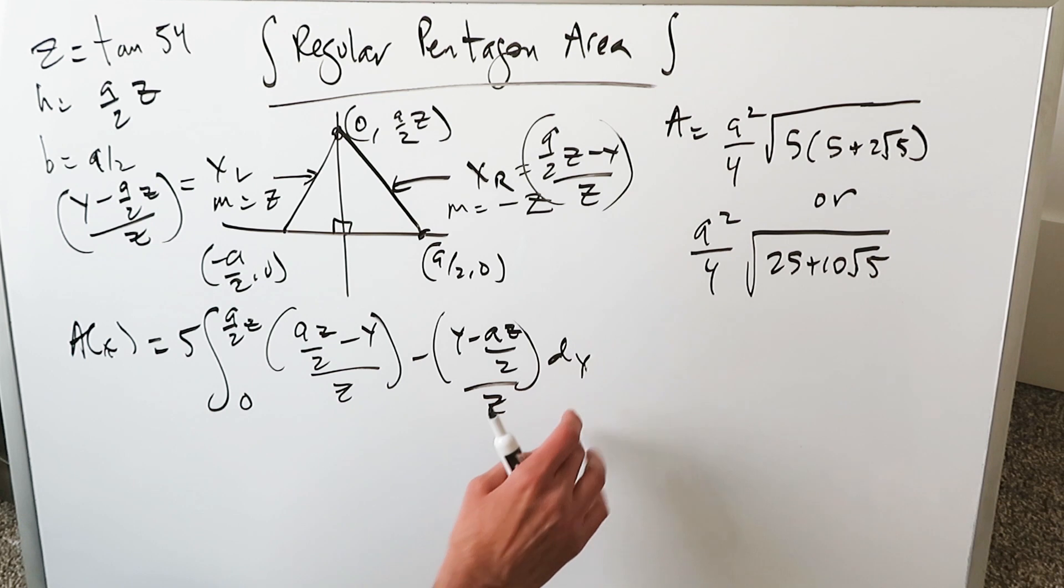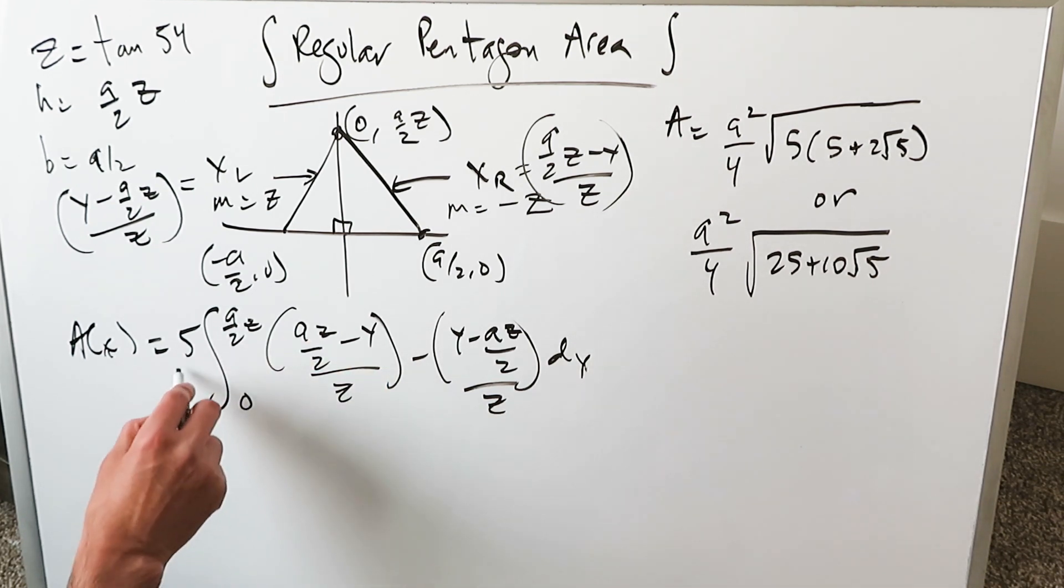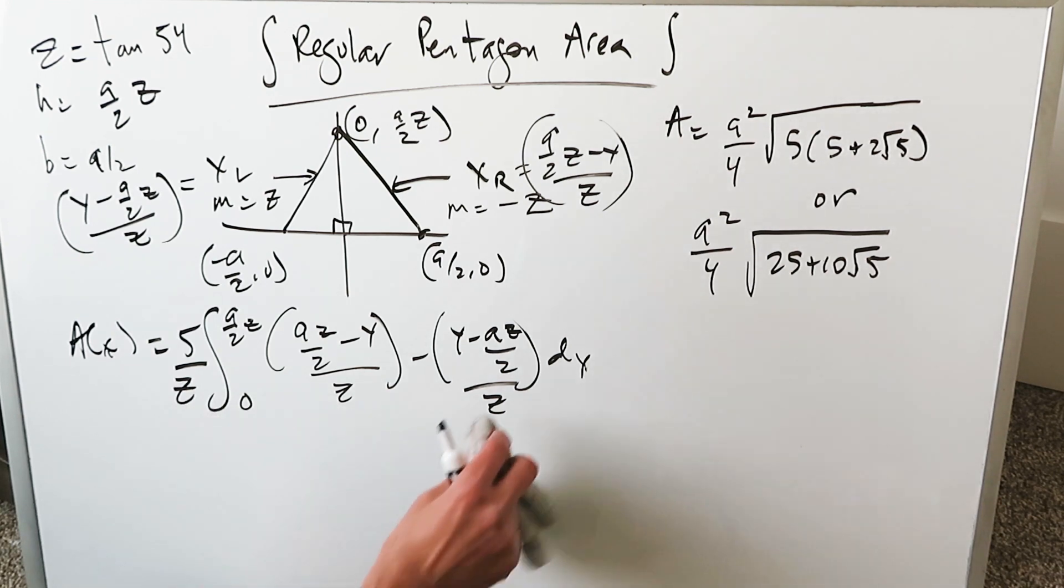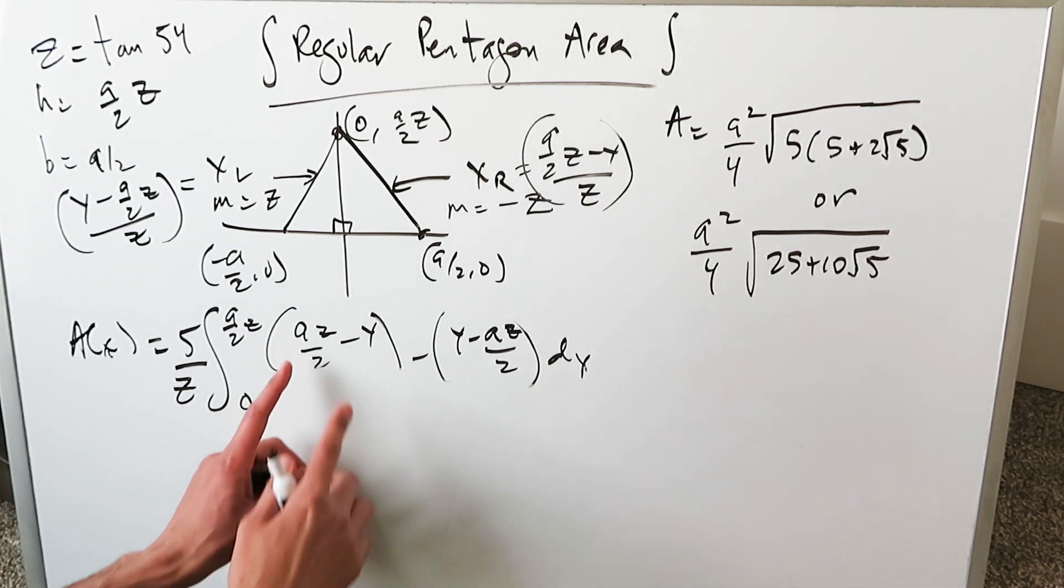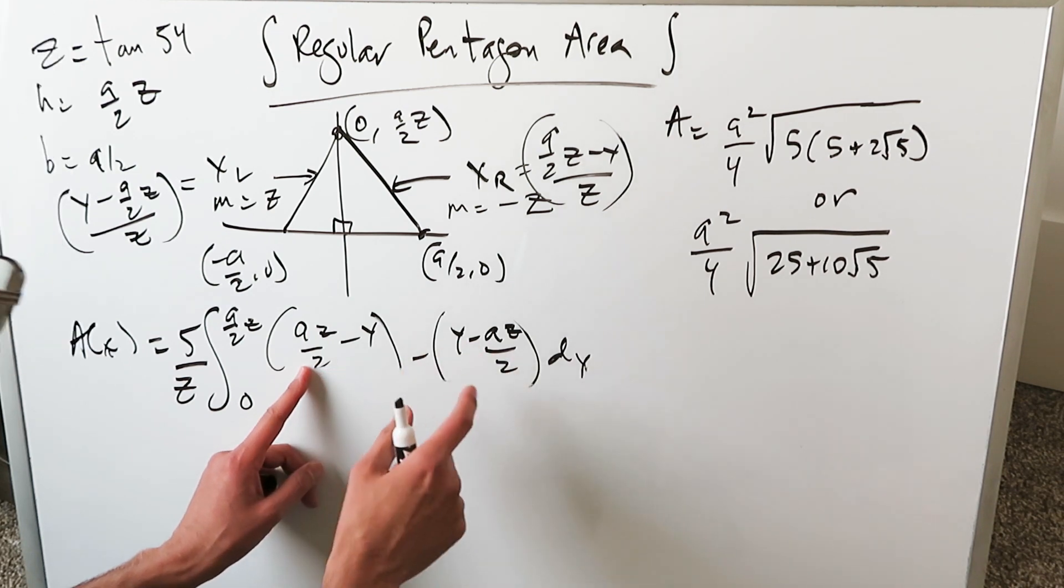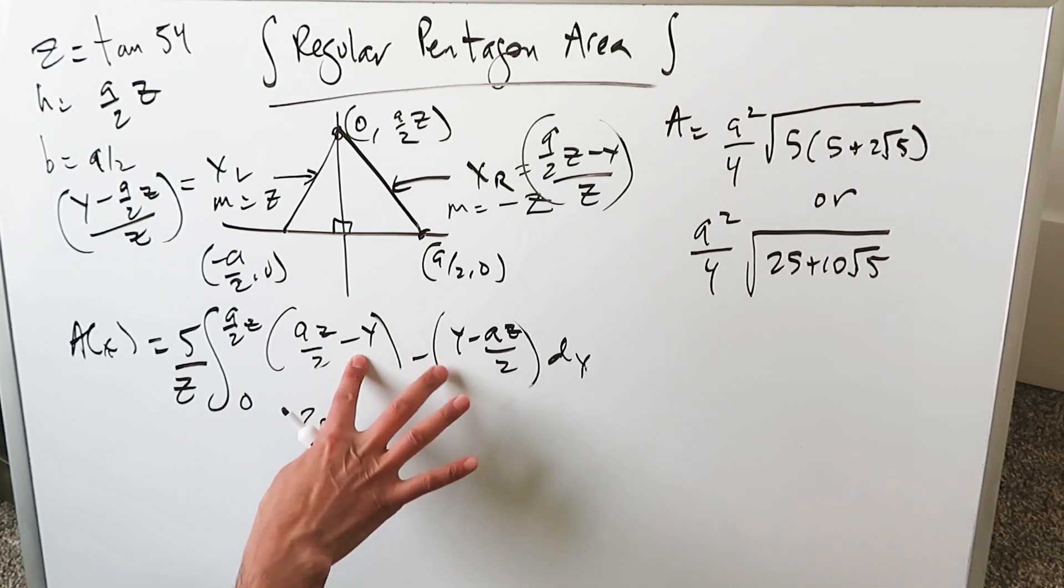We have AZ over 2 minus Y over Z minus this: Y minus AZ over 2 over Z DY. You can clean out all of this because look, you have a common denominator. This common denominator can be pushed out. You're really looking at 5 over Z. I'll erase these denominators out because I used up the denominator and pushed it out.